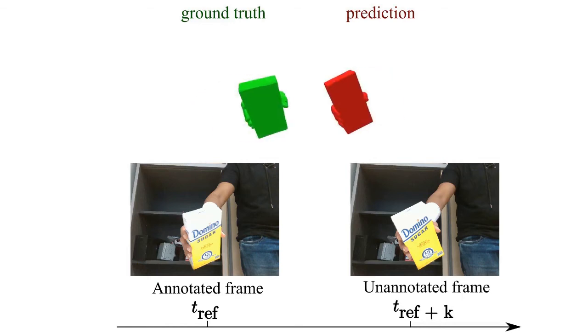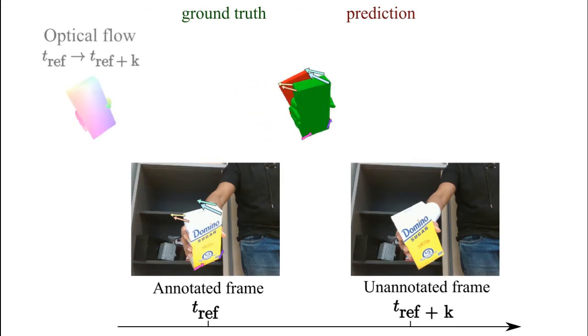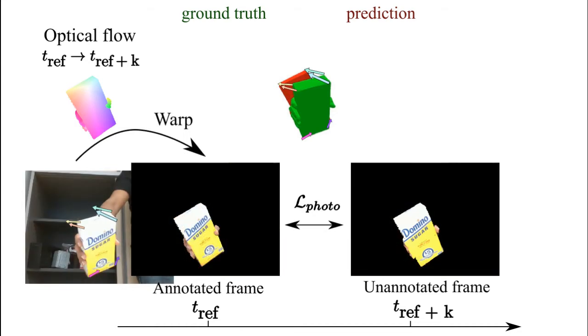We explicitly model vertex displacements in the image plane and use a differentiable renderer to warp the ground truth image and encourage photometric consistency with the unannotated frame.